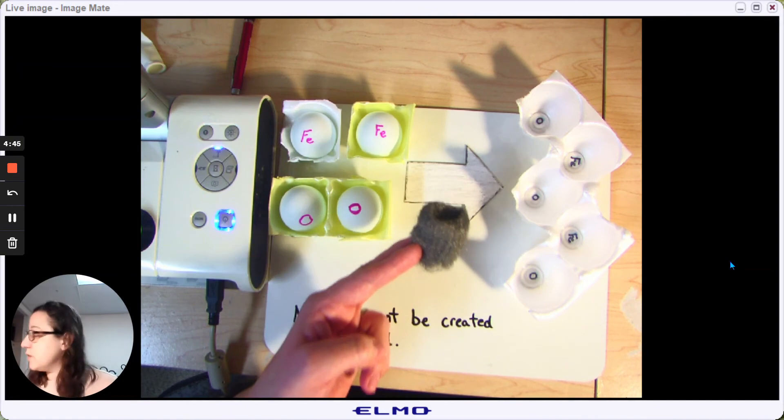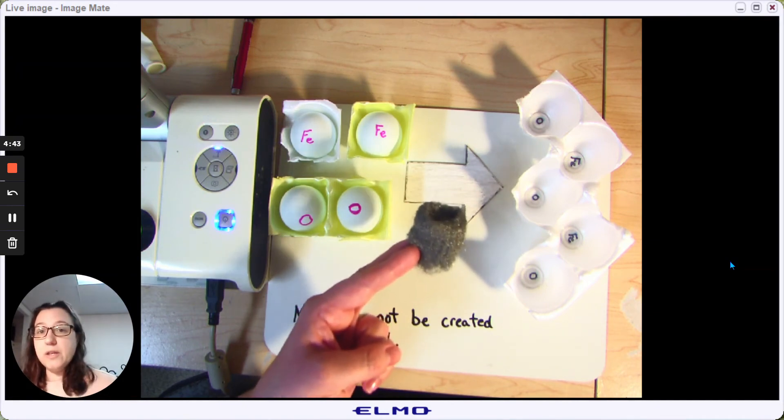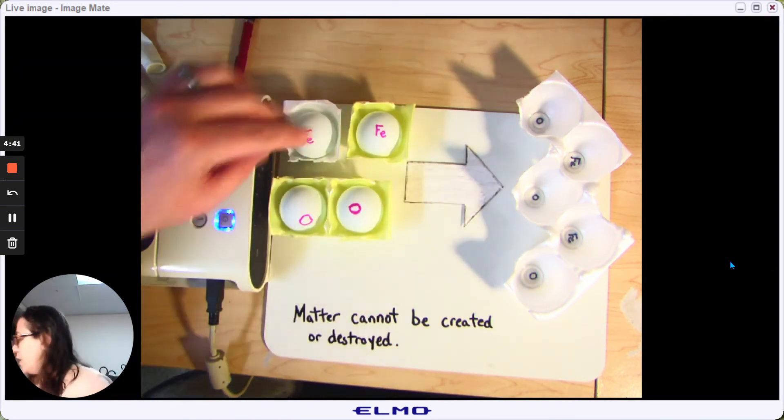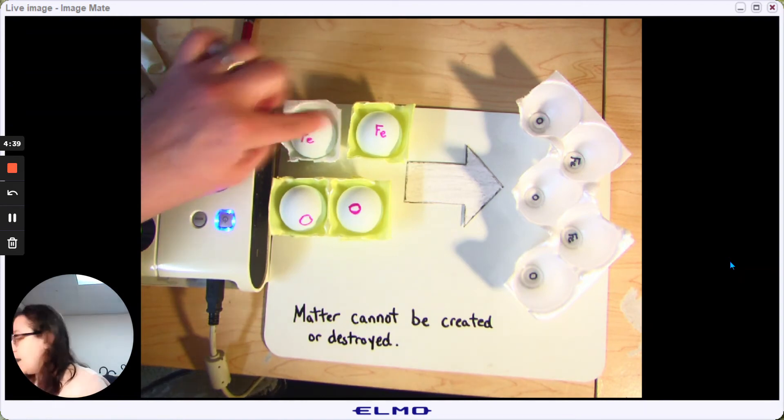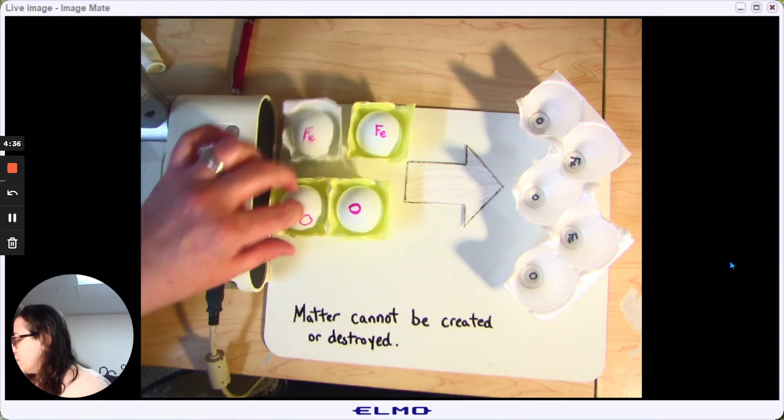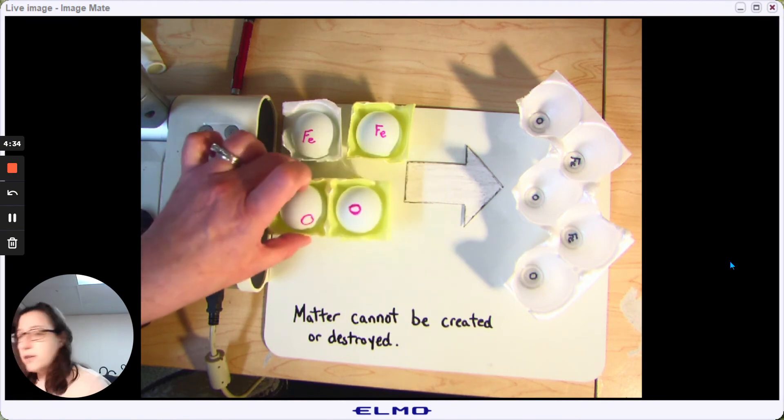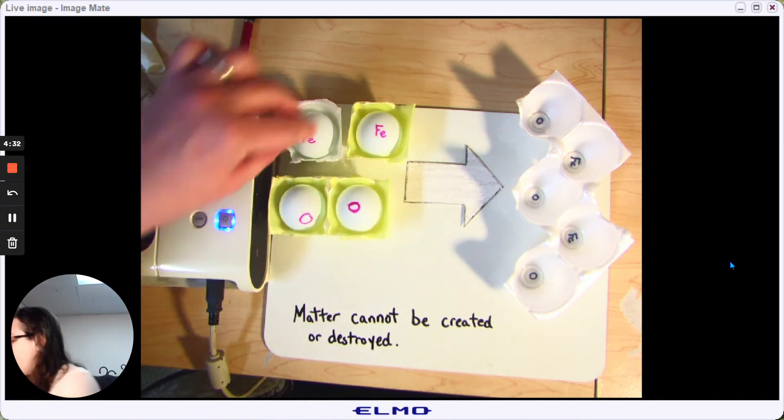And at the time we said, well, let's look at what's happening at the atomic level. At the atom level, we had iron atoms that go around individually, and we had oxygen atoms which like to go around as a pair. And we said,